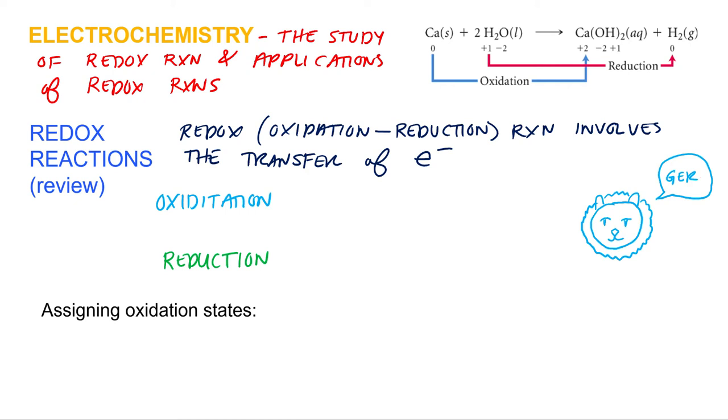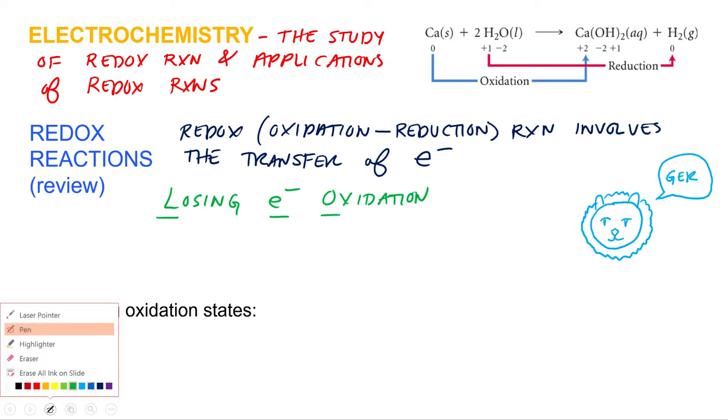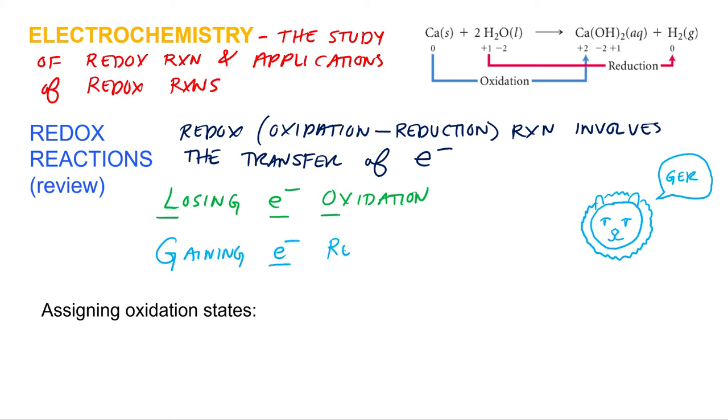Leo stands for losing electrons is oxidation. L-E-O. Let's hope you remember. And then when you ask him which one's which, he says grrr. But you have to remember that he spells grrr incorrectly. He spells it G-E-R. Depending on how hungry he is, that determines the number of R's. But he spells it G-E-R. He's a lion. Come on. I'm impressed he gets that far. So grrr is gaining electrons is reduction.